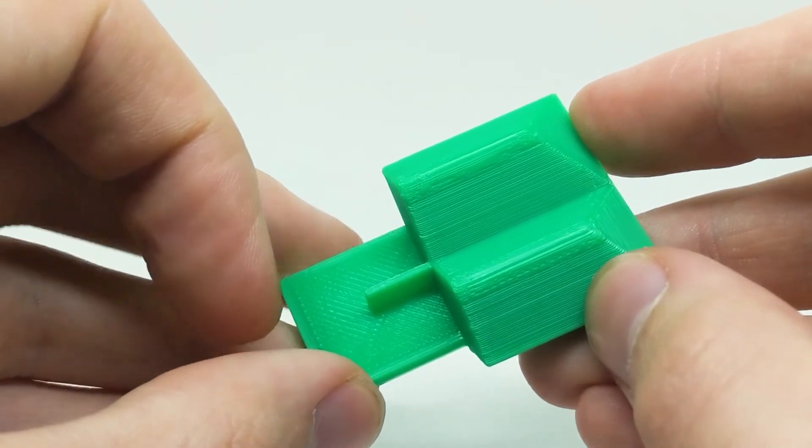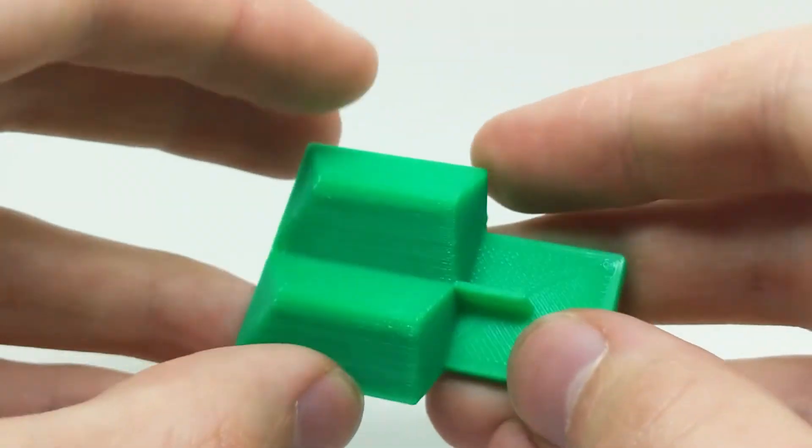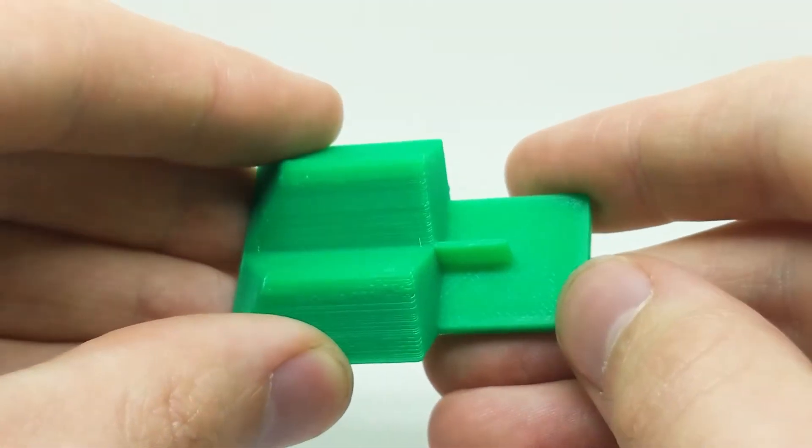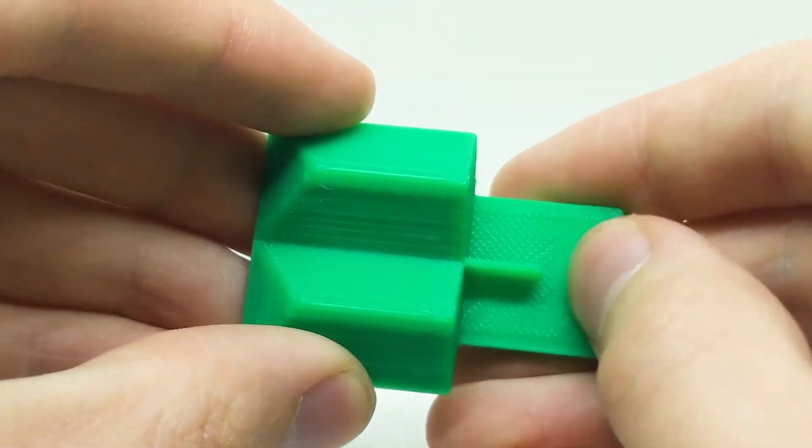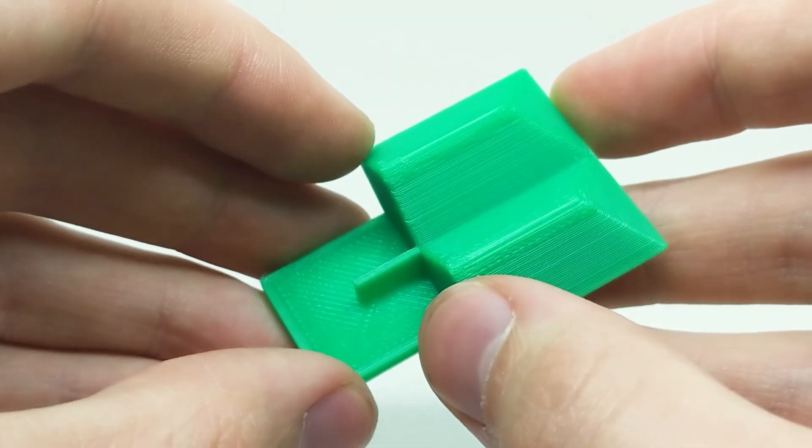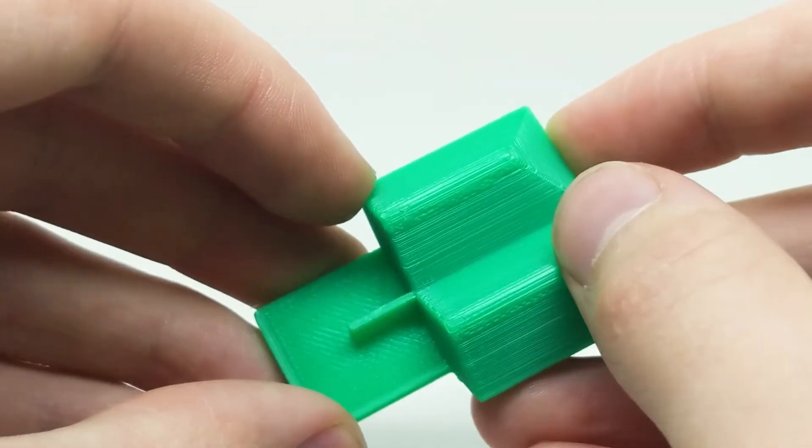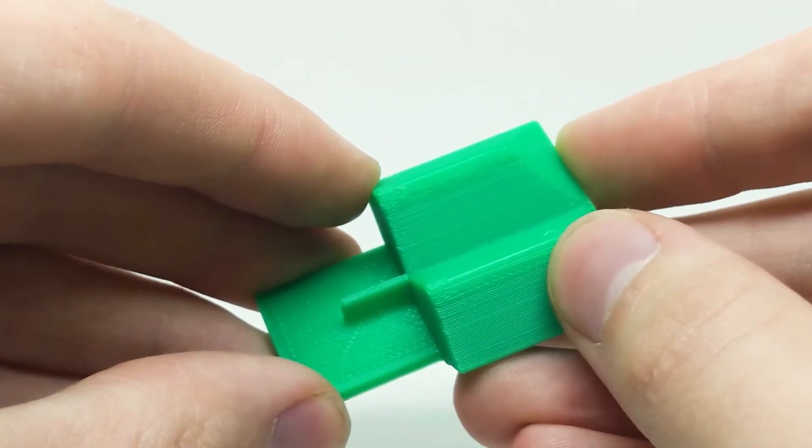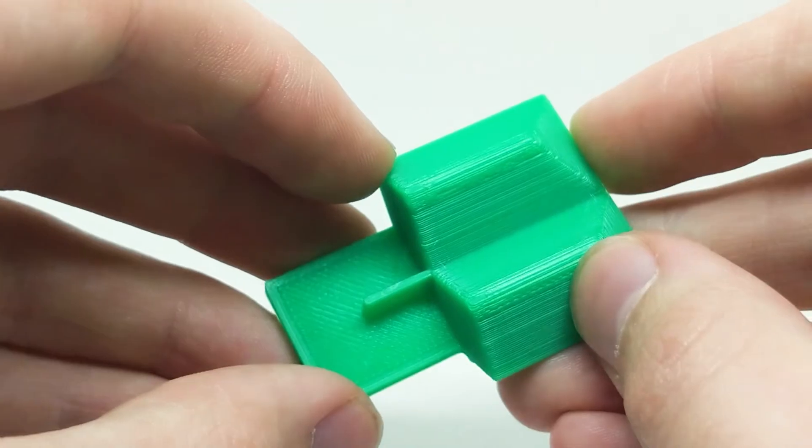So here's the test print done at 111% extrusion multiplier, and there's definitely some signs of overextrusion here. On this flat surface, it's quite rough, so you can feel the plastic trying to bulge out. And on these two top lines here, you can see there's some plastic bulging there as well, just because there's too much of it being fed through and it's got to go somewhere. So it's blobbing out the sides here. That's a definite sign of overextrusion.